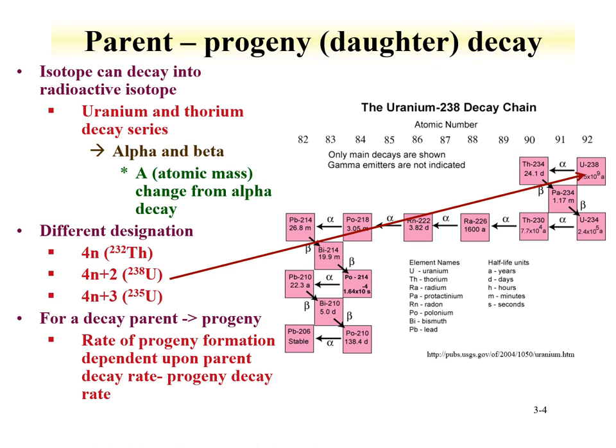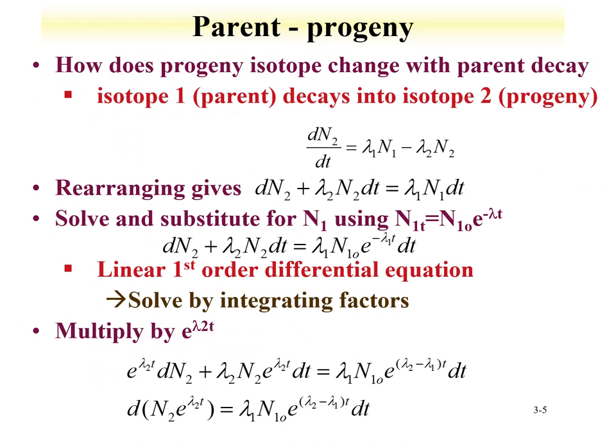For example, uranium-238 decays to thorium and eventually makes its way down to stable lead-206. There are actually four series; one starts with neptunium-237, which is short-lived enough that it has decayed away. For any parent-progeny decay, the rate of progeny formation is dependent upon the parent decay rate minus the progeny decay rate. This relationship is what we'll exploit to understand the equations governing parent and progeny decays.